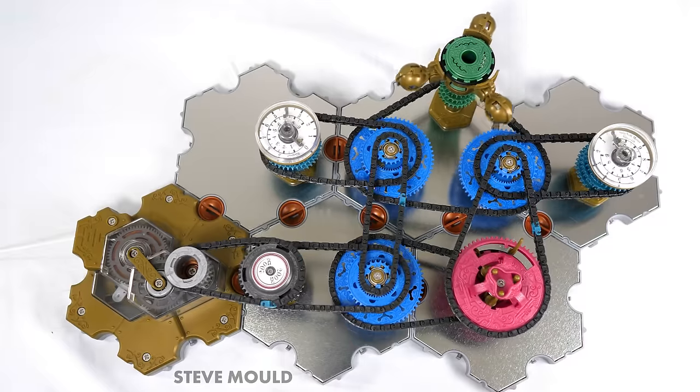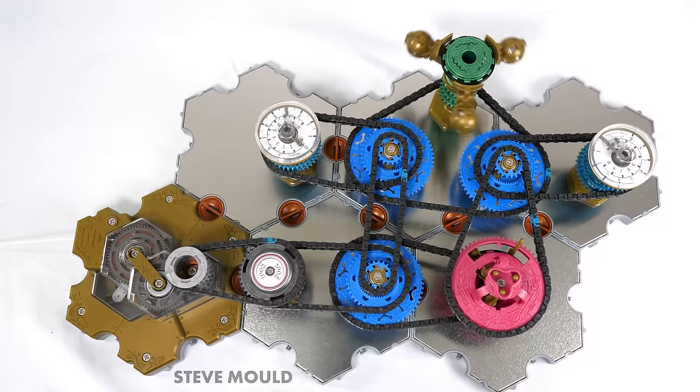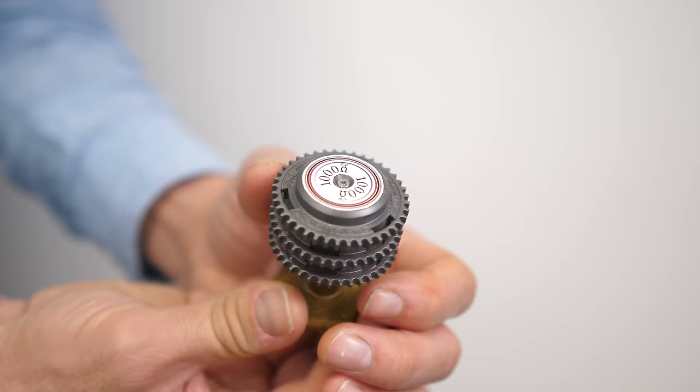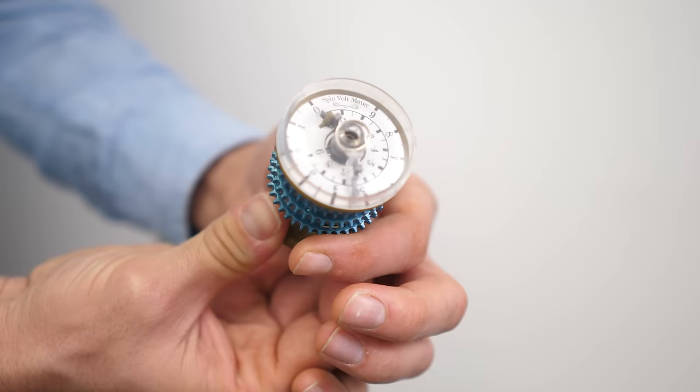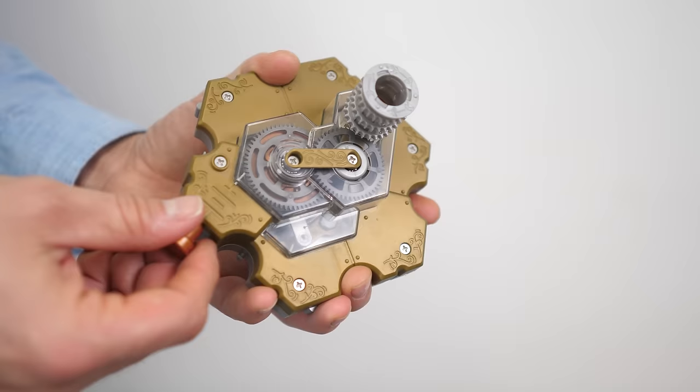This is a mechanical circuit, which is to say it's a collection of mechanical components that together are a really robust analogy for electric circuits. You've got resistors, transistors, capacitors, ammeters, batteries, inductors. It's really incredible what you can build with this thing.